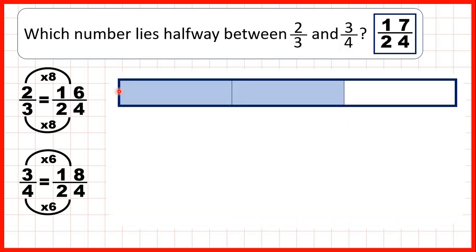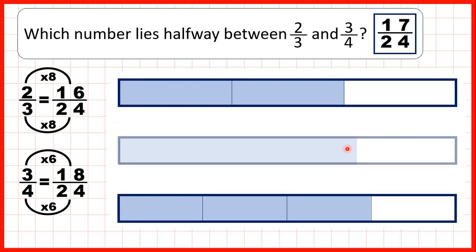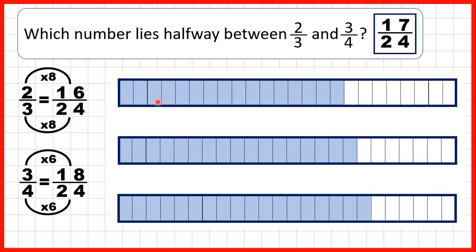And we can show the fraction bars for two-thirds and three-quarters and a fraction bar right in the middle. That's 17 over 24, and the way we worked it out was by changing two-thirds into 16 over 24 and three-quarters into 18 over 24, so we could see that 17 over 24 must be right in the middle or halfway between those fractions.